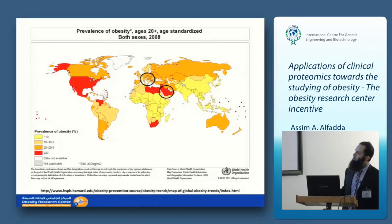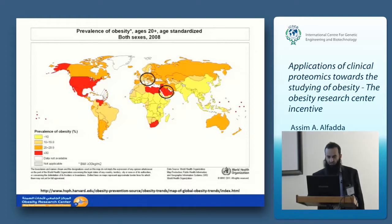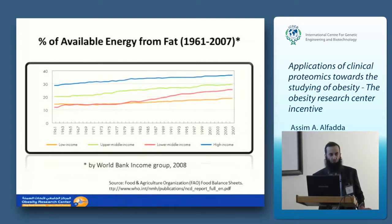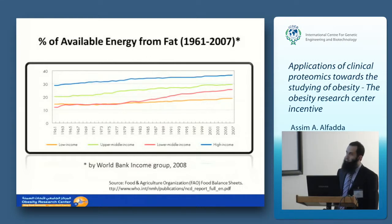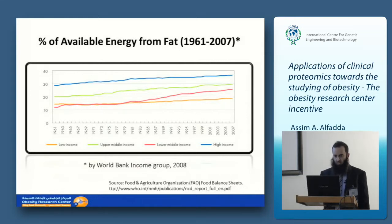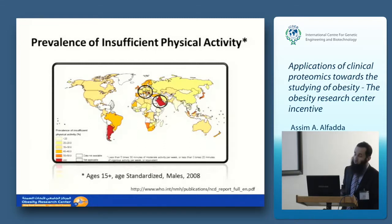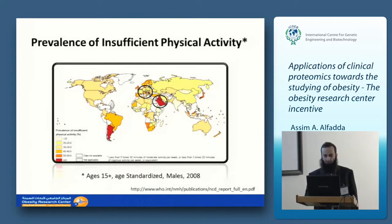We have more than 30% of our population with abnormal body fat accumulation, compared to about 10–20% in Italy. The reason is clear: in the last few years, there has been an increment in the percentage of available energy from fat, thanks to fast food. Whether from high-income or low-income countries, the percentage of energy we consume from fat is higher, and we have become more sedentary.